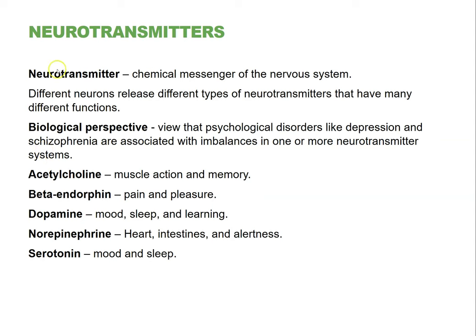Neurotransmitters are chemical messengers of the nervous system — kind of like locks and keys. The key ones we'll focus on are dopamine, which has to do with mood, sleep, and learning; and serotonin, also involved in mood and sleep. There's also norepinephrine — think of it like adrenaline. In fact, epinephrine and adrenaline are basically the same thing, so norepinephrine is essentially noradrenaline. If you have a norepinephrine boost, you can imagine what might happen if you had an adrenaline boost.